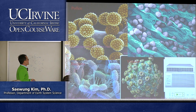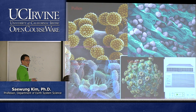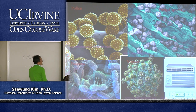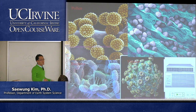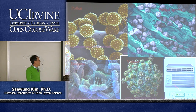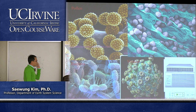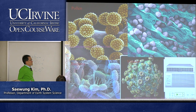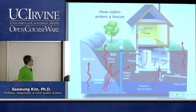During springtime, pollen can roll into your house along with fungal spores. Even bacteria and viruses — viruses travel through the atmosphere, which is why we have infectious diseases. If you count infectious disease spread through the atmosphere, that can be considered air pollution too.